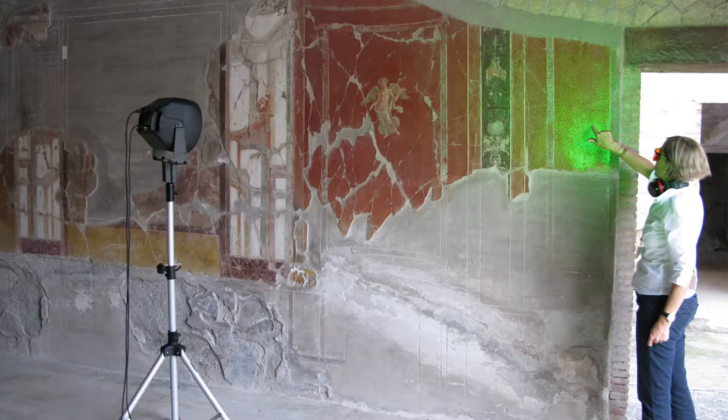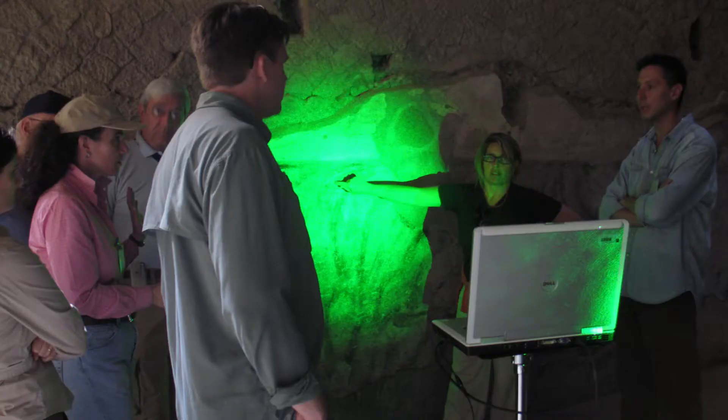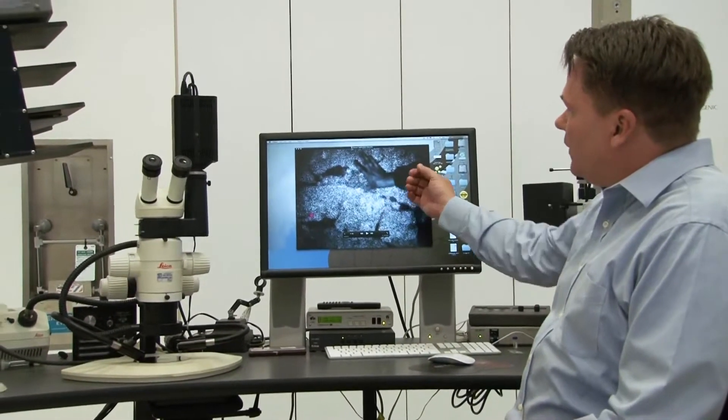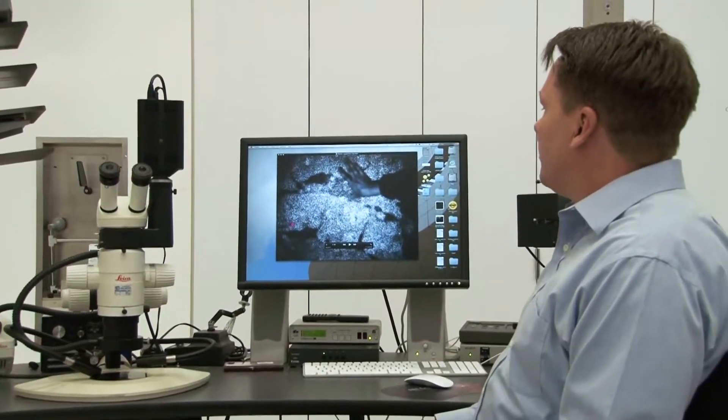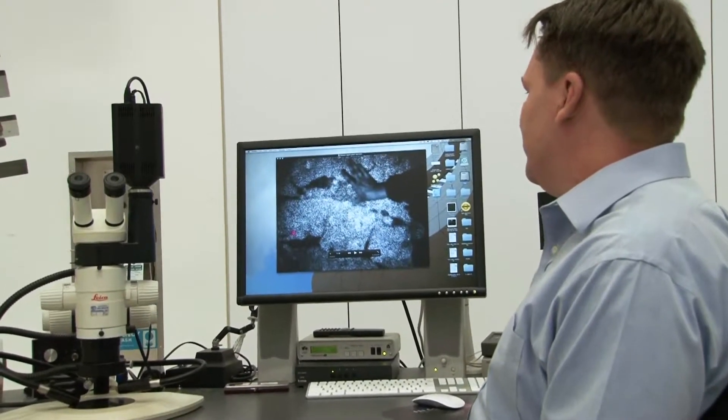it interferes with itself. And when it interferes with itself, it creates a pattern which we can see here on the screen. A bright speckle is a positive interference, whereas a dark speckle is negative interference.